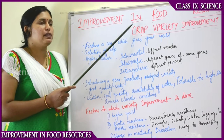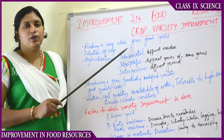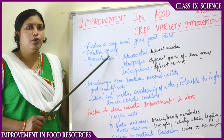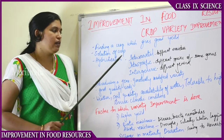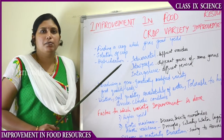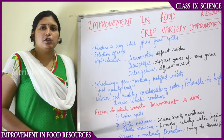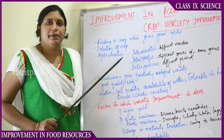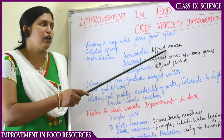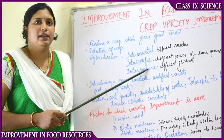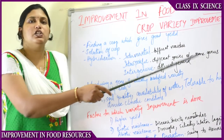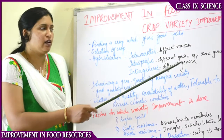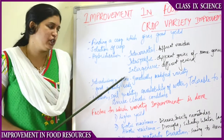In improving the crop yield, the first step is crop variety improvement - finding a crop which gives good yield, meaning increased quantity. Selection of a good crop is important. We can also do hybridization - crossing two different species or varieties to produce a new variety. Hybridization can be of three types: intervariety - crossing two different varieties of plants; interspecific - crossing two different species of the same genus or family; and intergeneric - crossing two varieties of different genera.